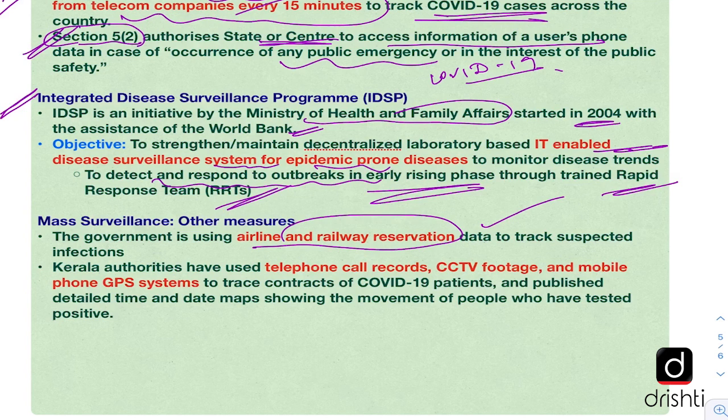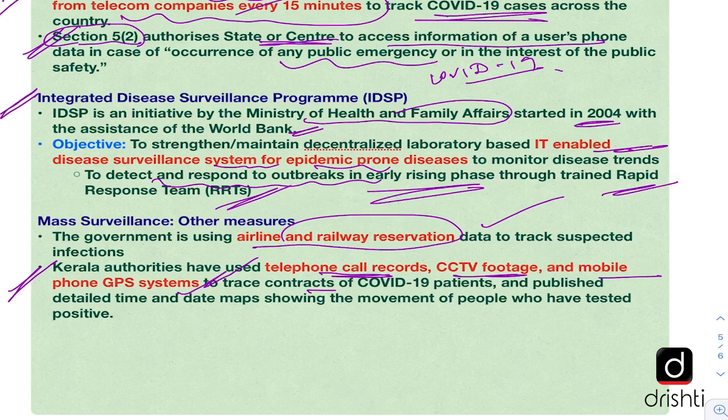Another step the government is taking is the Integrated Disease Surveillance Program (IDSP), an initiative of the Ministry of Health and Family Affairs started in 2004 with assistance of the World Bank. The main objective of IDSP is an IT-enabled disease surveillance system for epidemics or pandemics. It helps in detecting and responding to outbreaks in the early rising phase through Rapid Response Teams (RRTs). Other measures include tracking airline and railway reservation data, and the Kerala government is using telephone call records, CCTV footage, and mobile phone GPS systems to trace the contacts of COVID-19 patients.